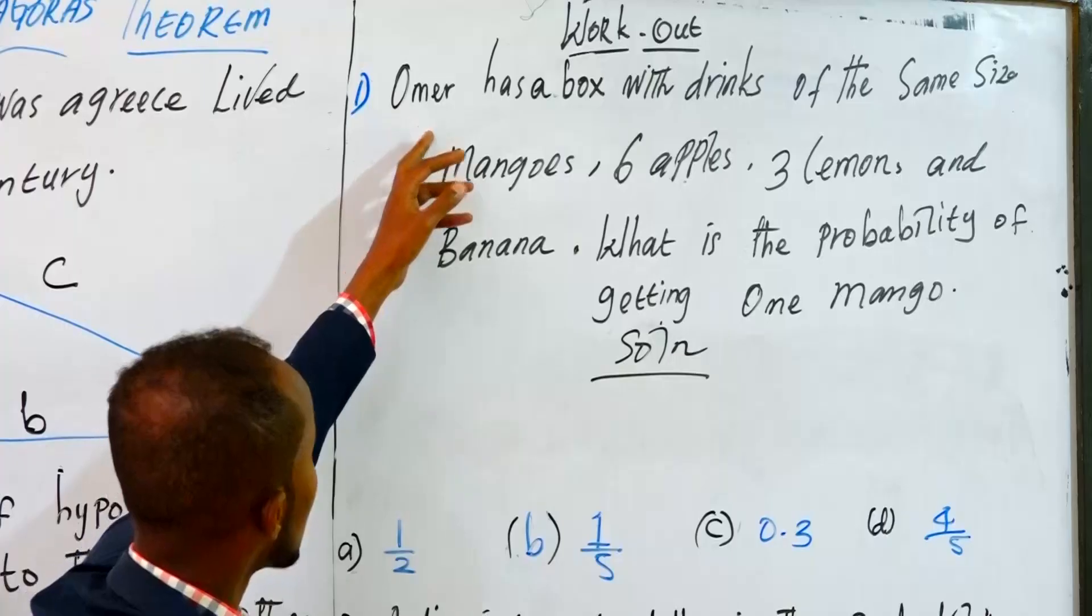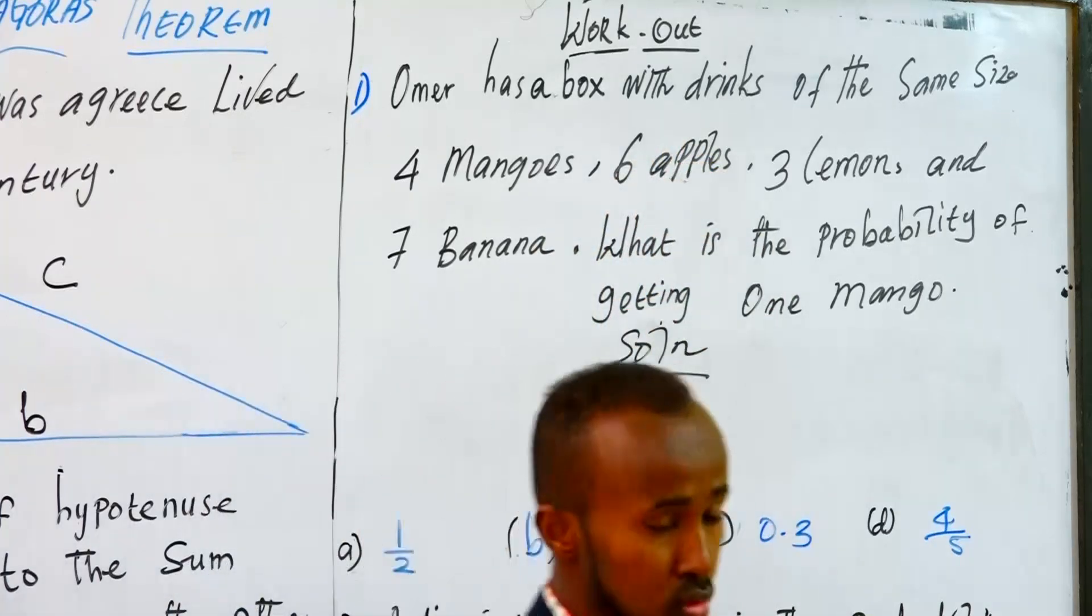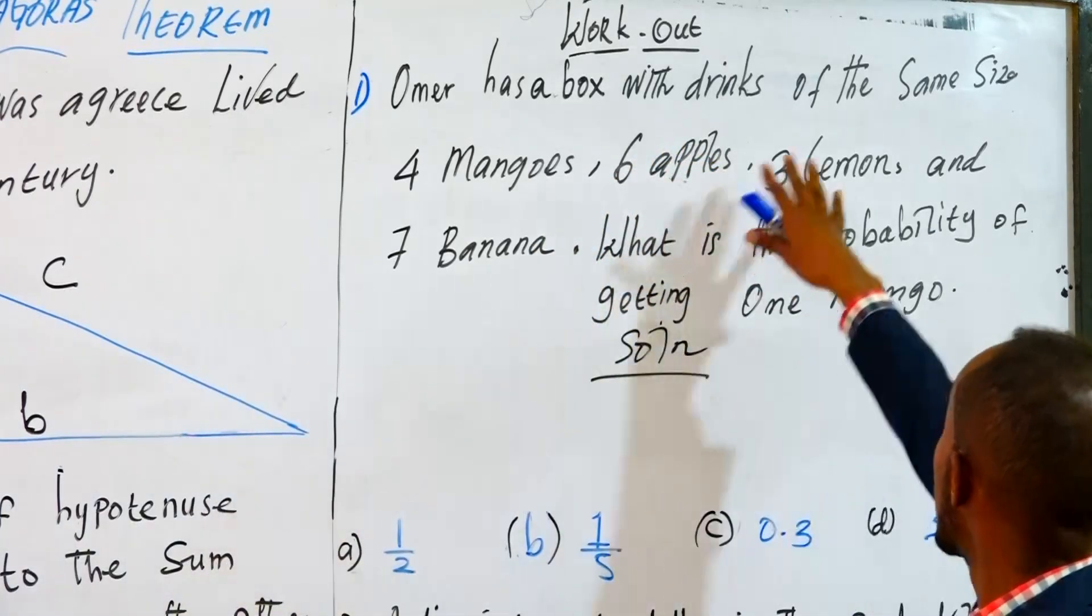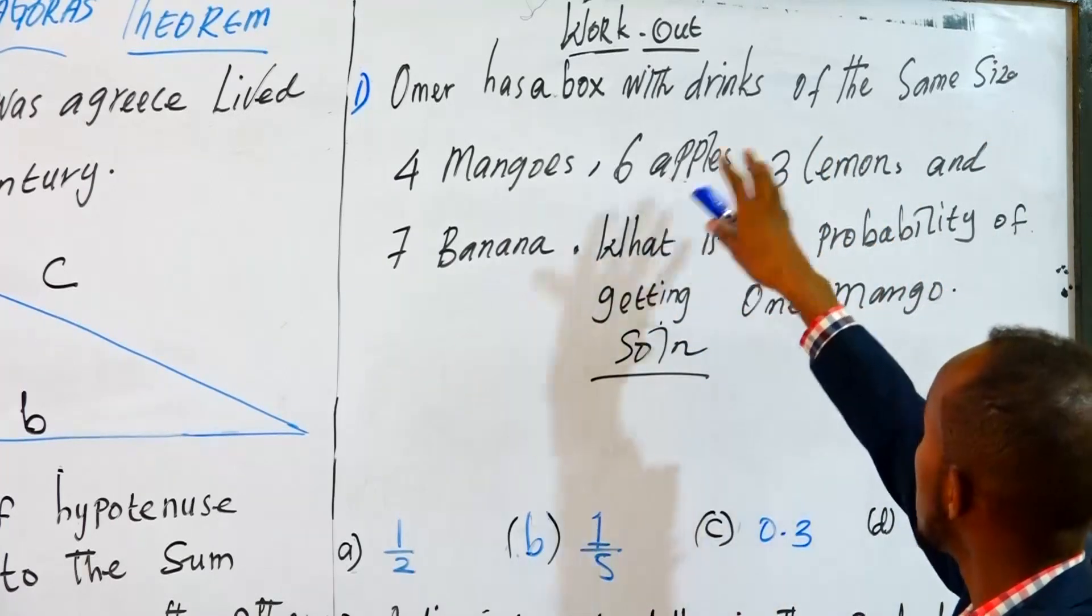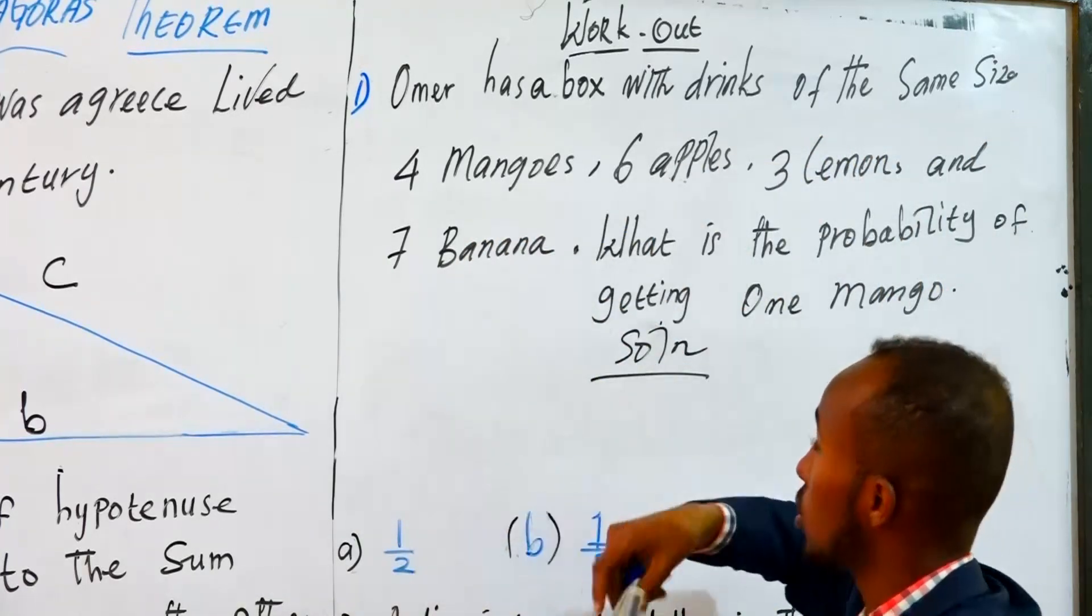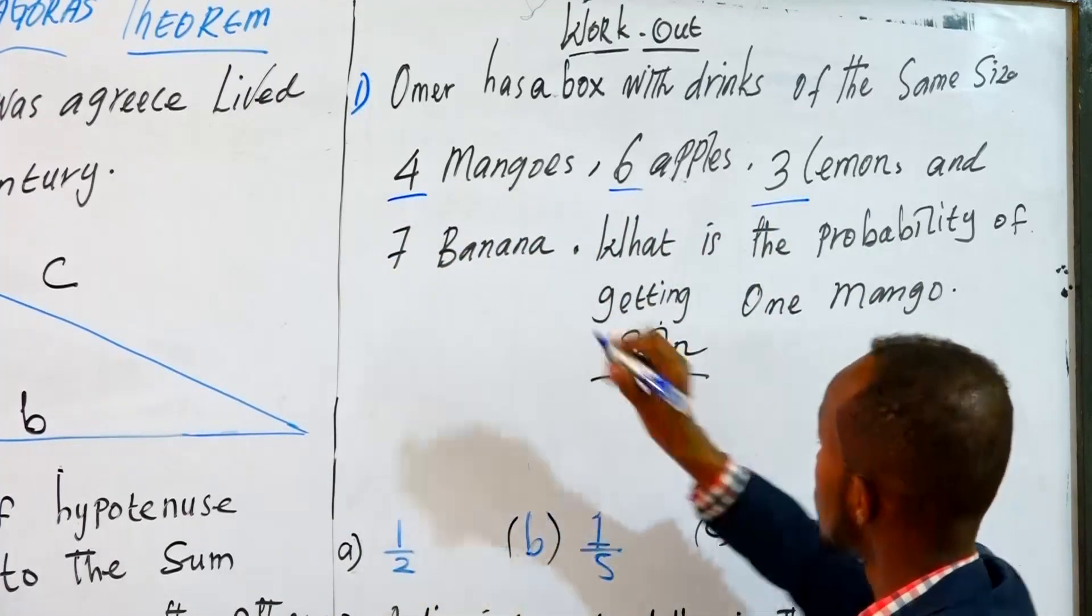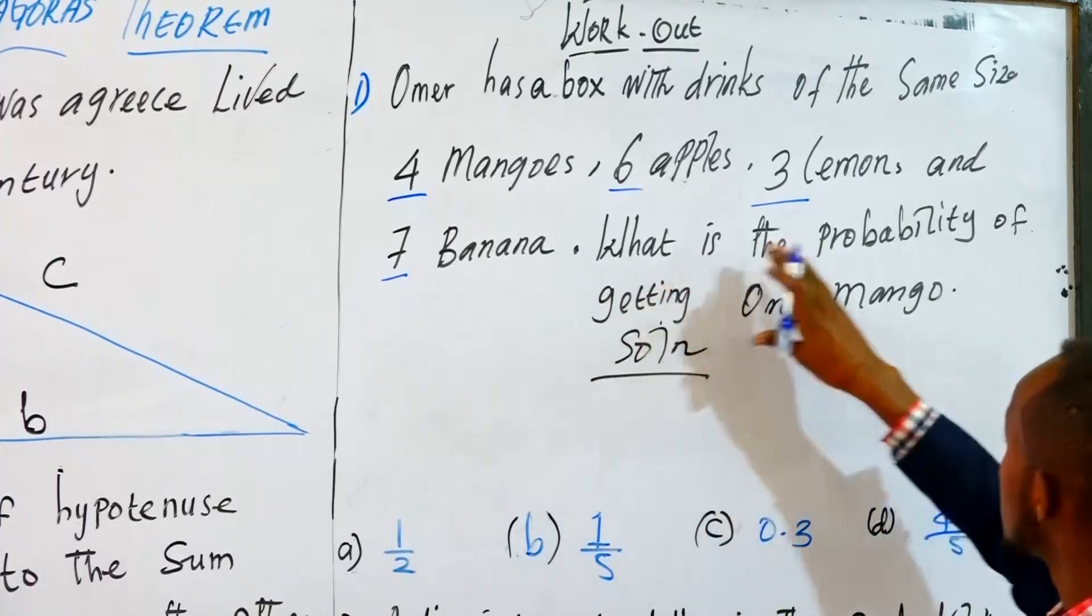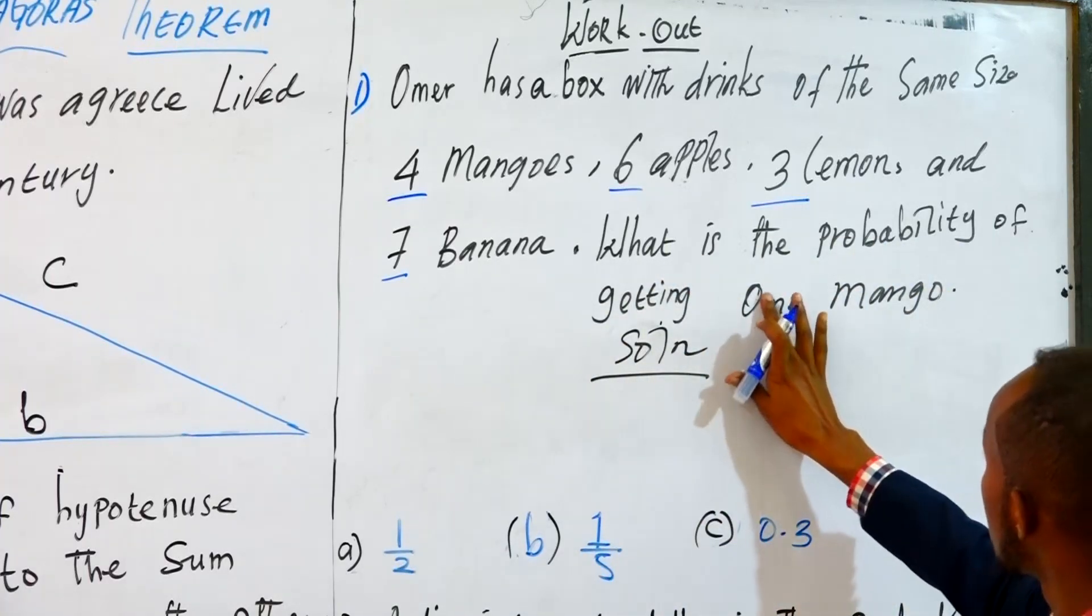Even if she would like to ask that question with a drink, this is the same size. This is the same size. Six apples, three lemons, and seven bananas. What is the probability of getting one banana?